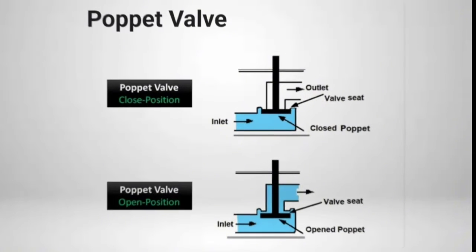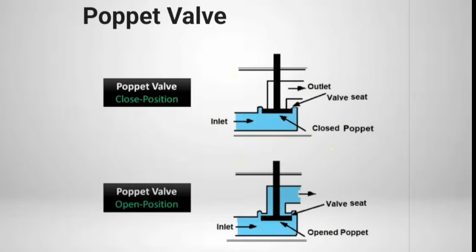One among them is the poppet valve, in which the poppet is piston-shaped or ball-shaped that moves the valve seat, positioning it open and closed, on or off.